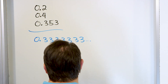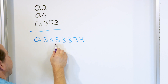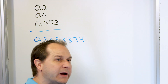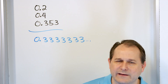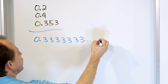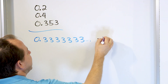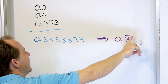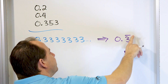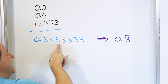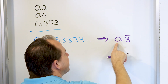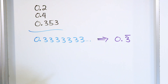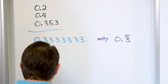So how do you write a decimal like this? We don't want to write all these digits forever because the threes are going on and on. You could never write them all down. The best way to write it is to put 0.3 and then put a bar over the three. This bar means that the number three is what is repeating — so it's 0.333333 on forever.